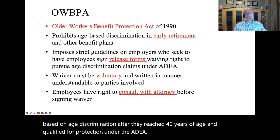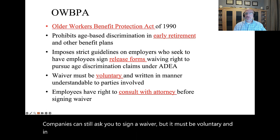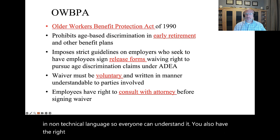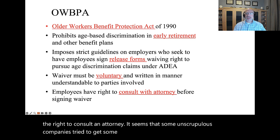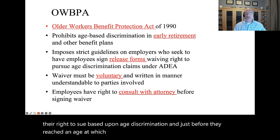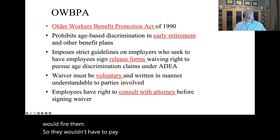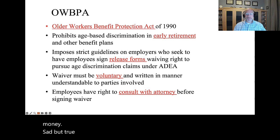Companies can still ask you to sign a waiver, but it must be voluntary and in non-technical language so everyone can understand it. You also have the right to consult an attorney. It seems that some unscrupulous companies tried to get unsuspecting employees to sign a waiver of their right to sue based upon age discrimination, and just before they reached an age qualifying for a pension, the company would fire them so they wouldn't have to pay the pension. Now it's much more difficult to do this legally.